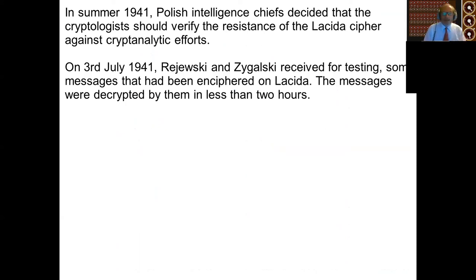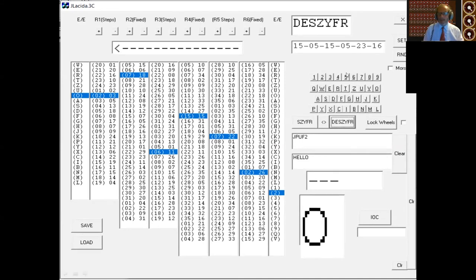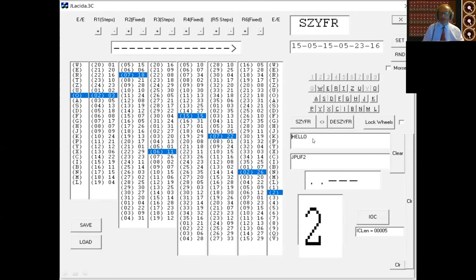A Polish intelligence chief decided that maybe their cryptologists who'd already broken Enigma should verify the resistance of the Lacida cipher. And on 3rd July 1941, Marian Rejewski and Henryk Zygalski received for testing some messages that had been encrypted on Lacida, and they decrypted them in less than two hours. And as you can imagine, there was enormous consternation. Now, a feature of this machine is, as I pointed out already, Schifra and Deschifra. And in cipher mode, you can only input, because there's only 24 positions on the input, you can only input 24 characters.